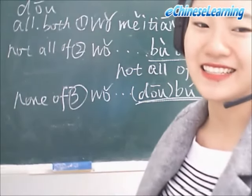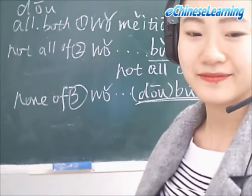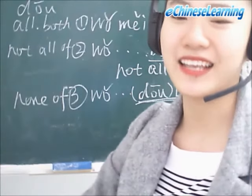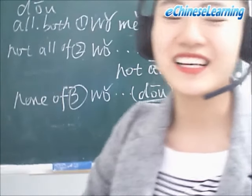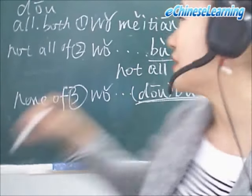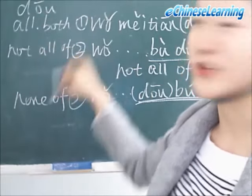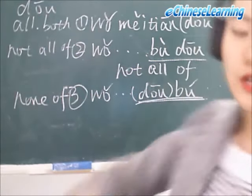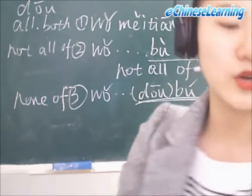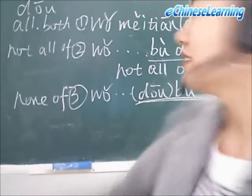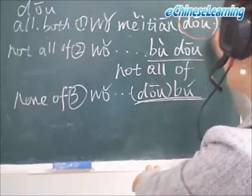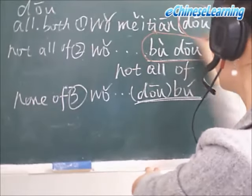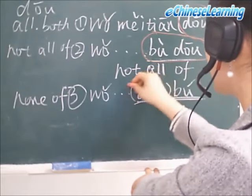Is it clear？好，那我要给你一些 question，你可以 answer，choosing from these three words：都，不都，or 都不。好，那我写在这儿，这是第一个，第二个，and 第三个。